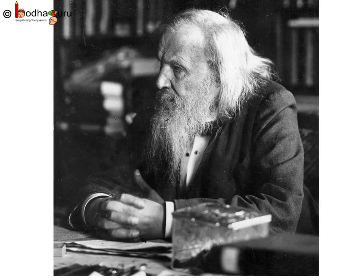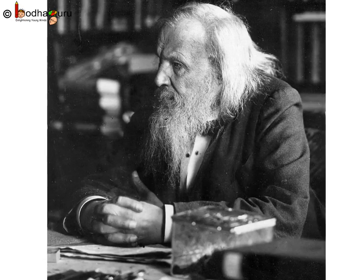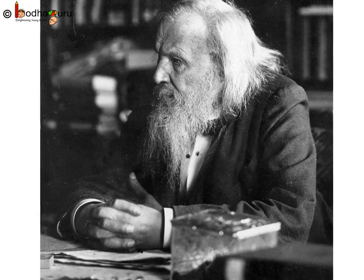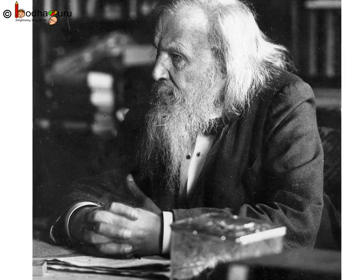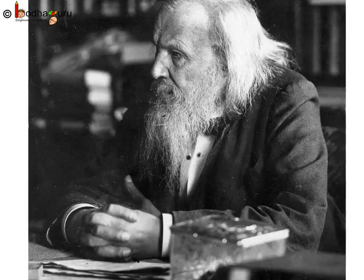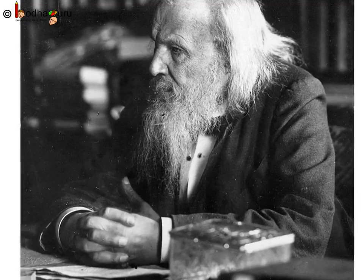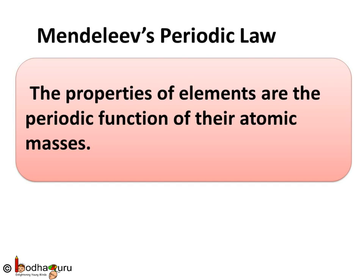Mendeleev's periodic table was one of the most important achievements in chemistry. But how did he achieve something which many scientists failed before? Mendeleev explained the basic physical and chemical properties of all 63 elements and wrote them onto cards. Then he took elements with similar properties and pinned their cards together on a wall. He observed that most of the elements got placed in a table and were arranged in order of their increasing atomic masses. So he concluded that the physical and chemical properties of the elements are periodic functions of their atomic masses. This is known as periodic law, which states that the properties of elements are the periodic function of their atomic masses.